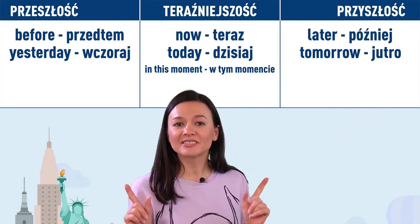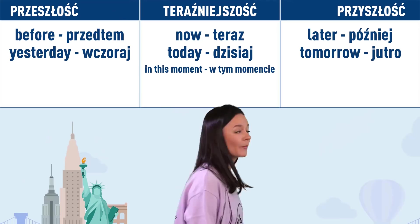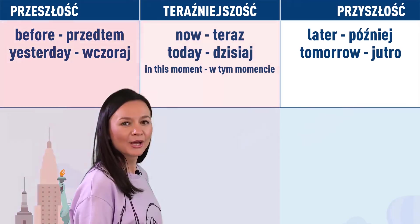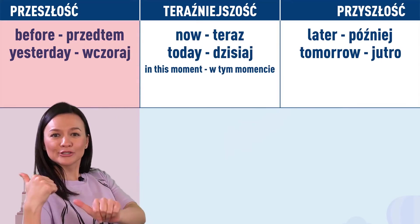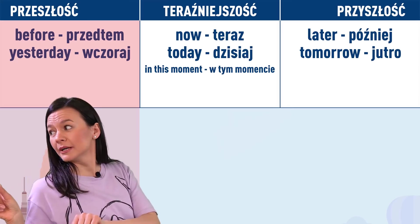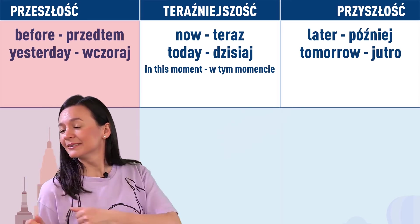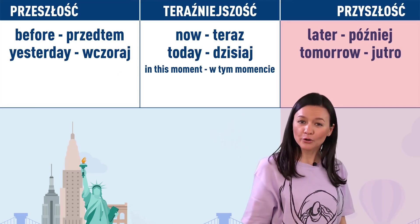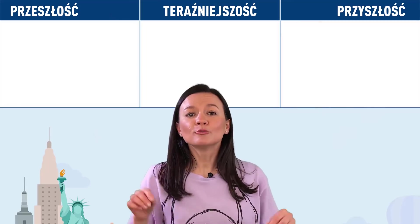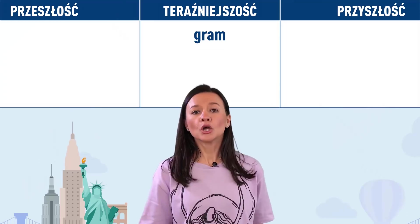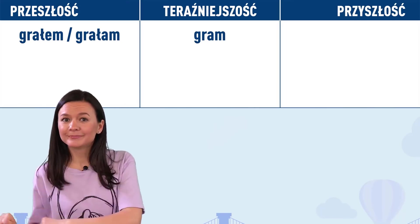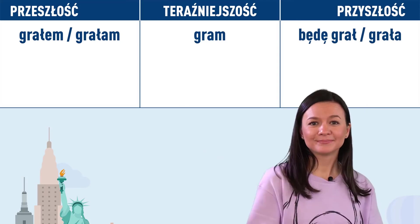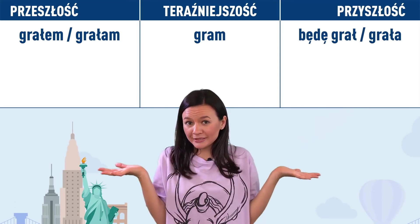To są słowa, dzięki którym możemy wskazać, czy mówimy o teraźniejszości – now, today; o przeszłości – before, yesterday; lub o przyszłości – later, tomorrow. Po polsku mówimy: gram, grałem/grałam lub będę grał/będę grała. A jak to powiemy po angielsku?